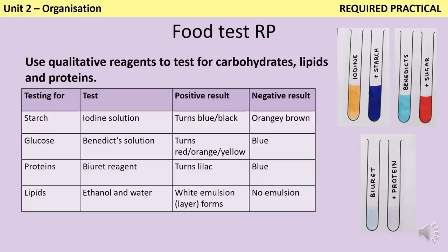For the food test required practical, test for starch using iodine solution — orange-brown normally, turning blue-black in the presence of starch. To test for glucose, boil the sample with Benedict's solution — starts bright blue and turns green, yellow, orange then red depending on how much sugar is present. To test for proteins, use Biuret reagent (be careful with this spelling) — it turns lilac-purple if protein is present. For lipids, use tracing paper for solid foods and look for a greasy stain, or add ethanol and water and shake to produce a white emulsion if lipids are present.